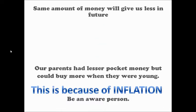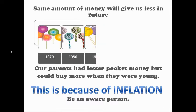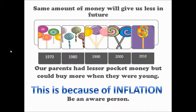Say in 1970 with some amount of money you could buy 5 ice creams. In 1980 you would be able to buy fewer — say 4. Similarly in 1990 you could buy 3. In 2000, 2, and in 2010 just 1. So what we are trying to say is that the same amount of money will give us less in the future. Our parents had lesser pocket money but they could buy more when they were young. This is all because of inflation.